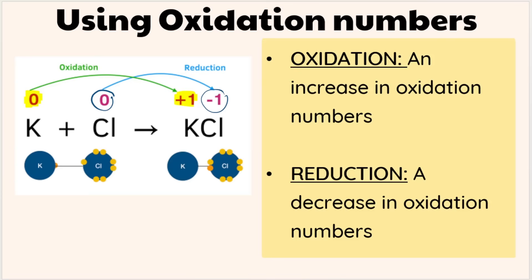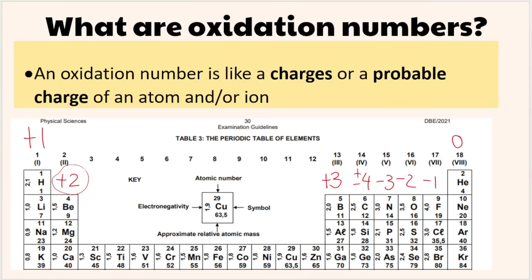But what are oxidation numbers and how do we assign them? An oxidation number is like a charge or a probable charge of an atom or an ion. Hopefully you remember from grade 10 the different valencies or charges associated with the periodic table.